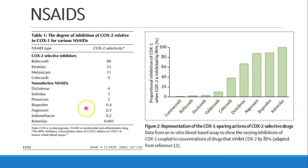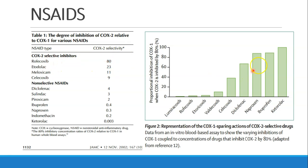Different substances have a different degree of inhibition of COX-1 relative to COX-2. We can see Ketorolac, which is very COX-1 selective with very little COX-2 selectivity, all the way through to drugs no longer on the market, like Rofecoxib, which has very high COX-2 selectivity. Here we see again the COX-1-sparing actions of COX-2-selective drugs, going from Ketorolac all the way down to Rofecoxib and others.